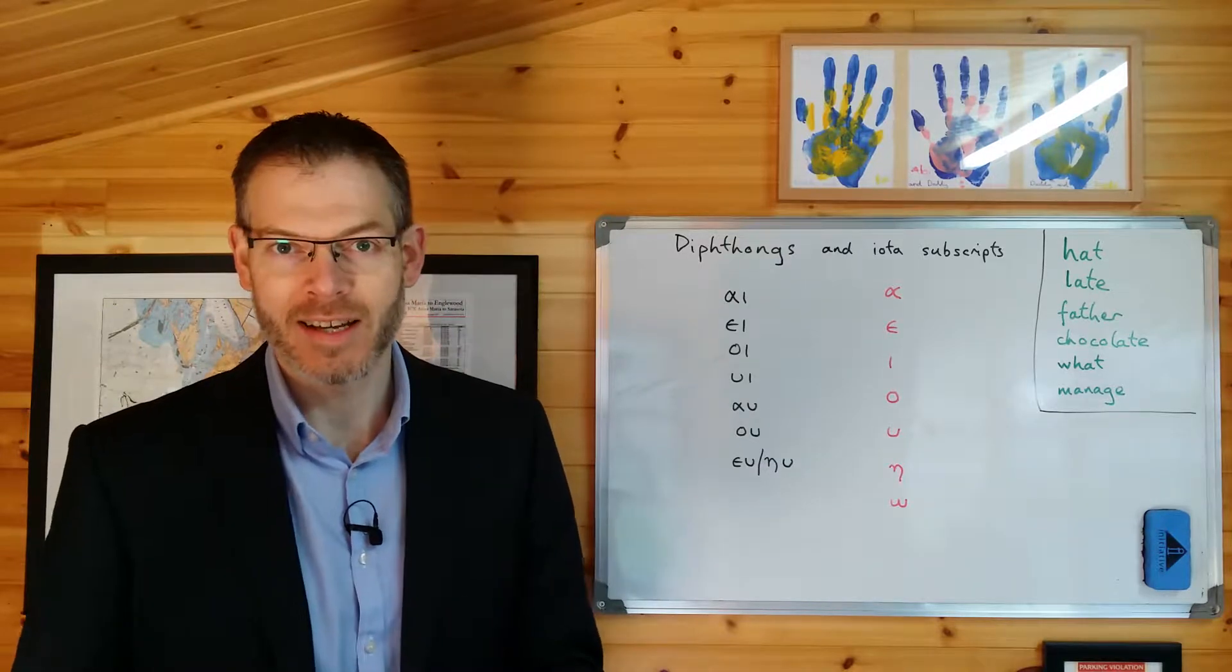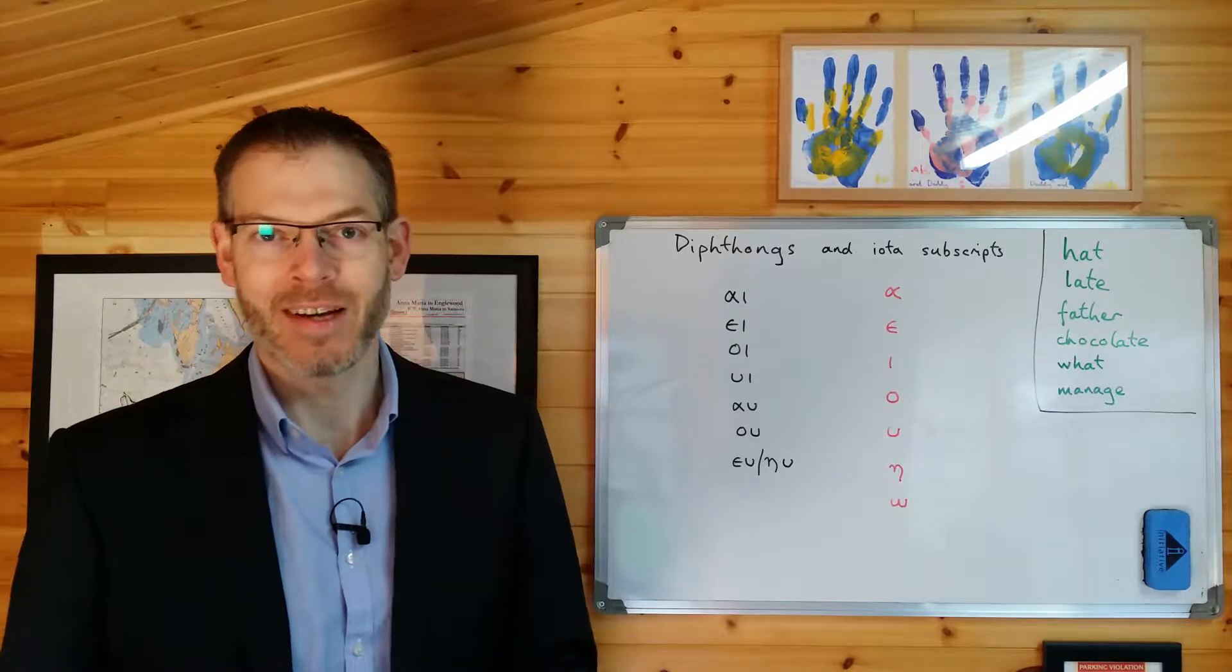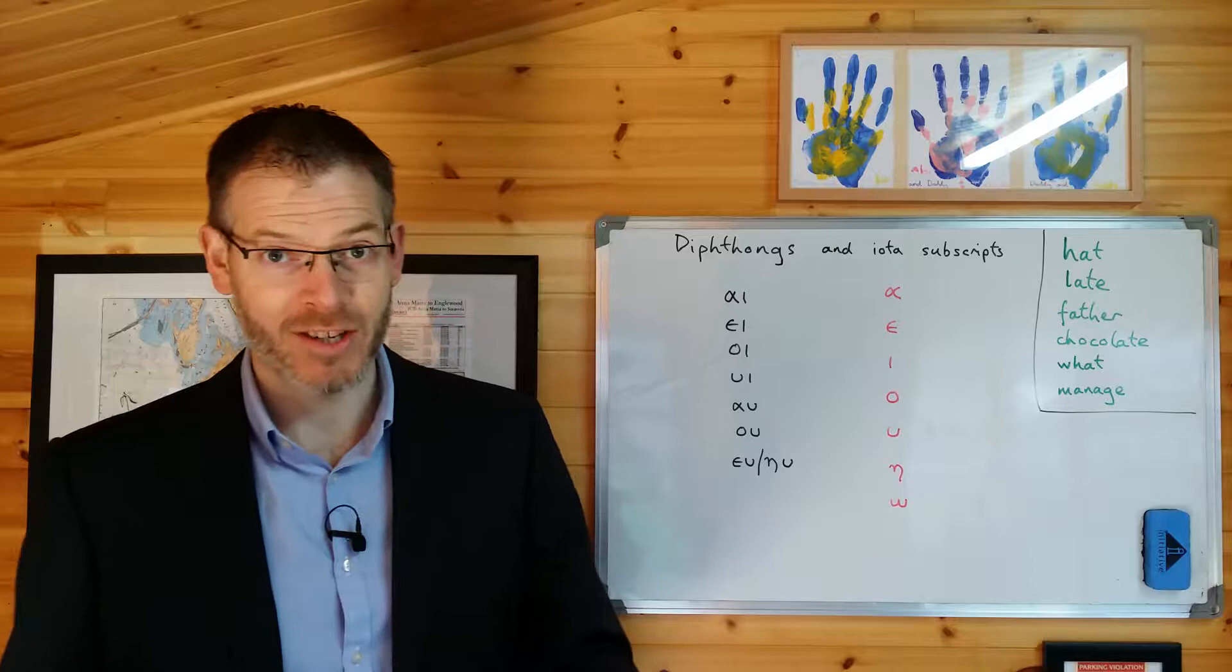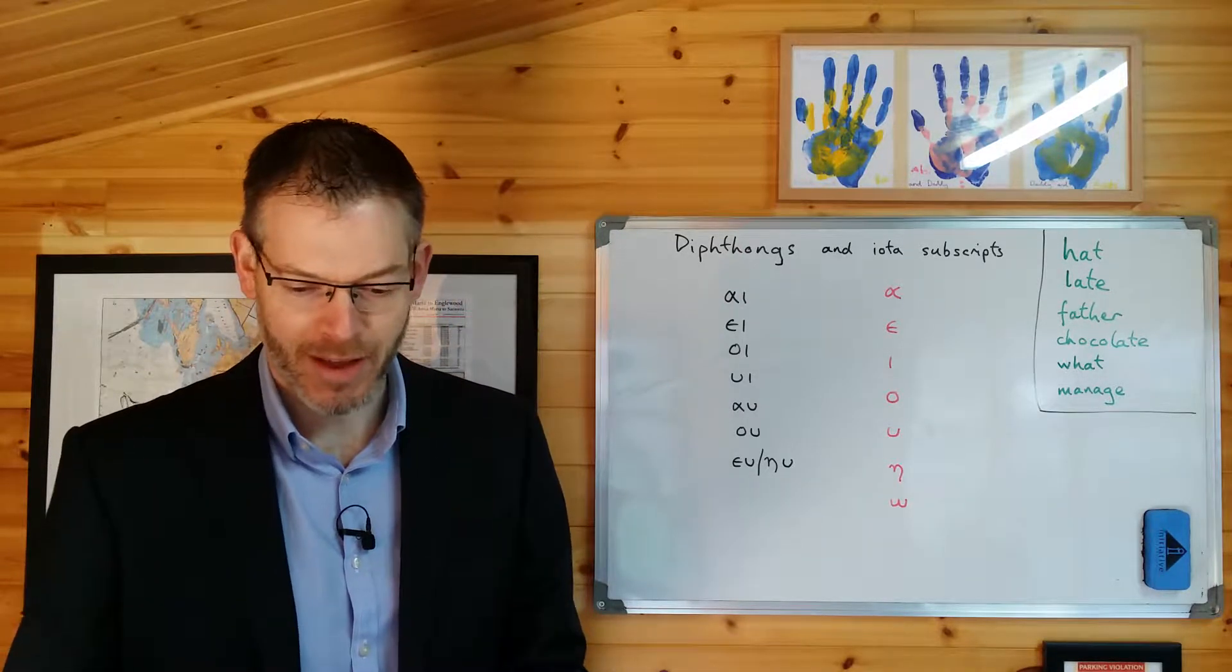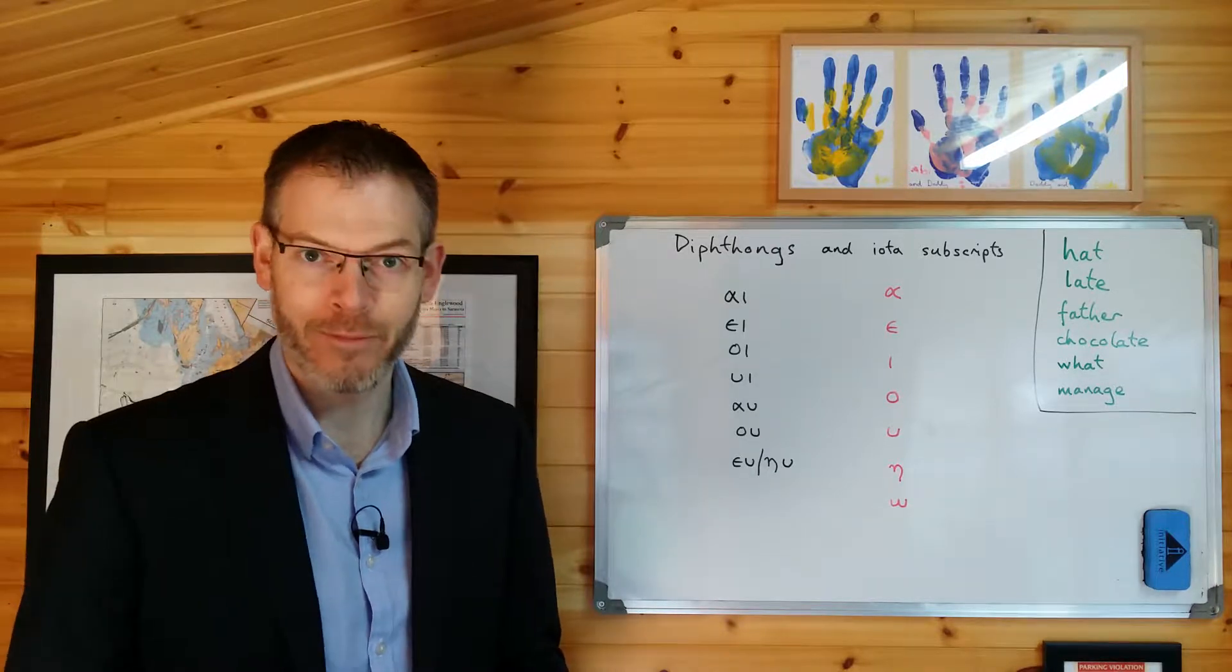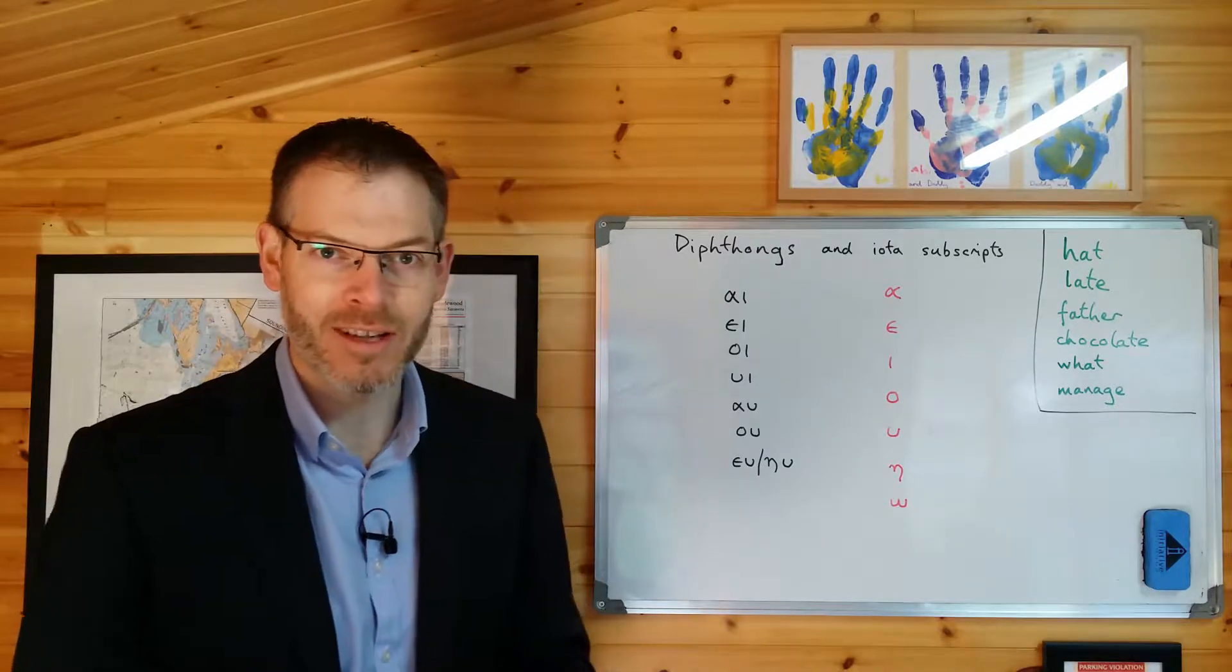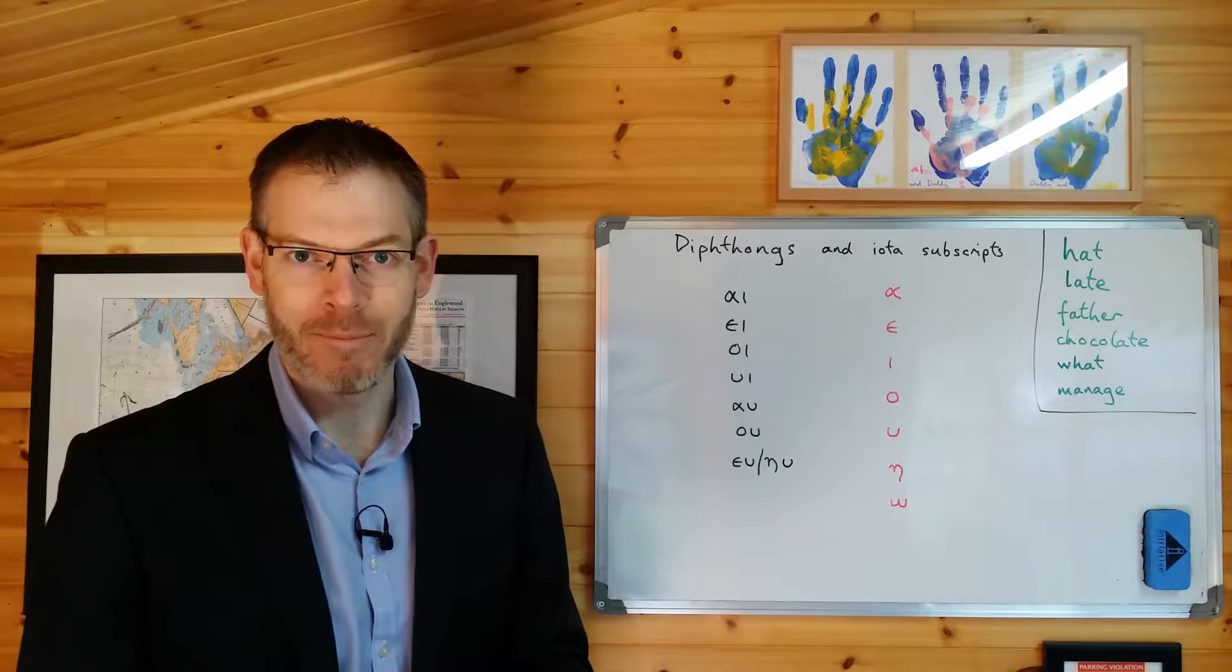Now, sections 1.5 and 1.6 are pretty straightforward. 1.5, accents and stress. There's a great explanation there. I won't go over it for you. 1.6, again, punctuation. No need to talk about that. You can read it for yourself. But section 1.4, diphthongs and iota subscripts, is worth just looking at a little bit more carefully.